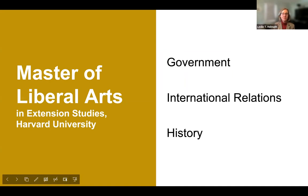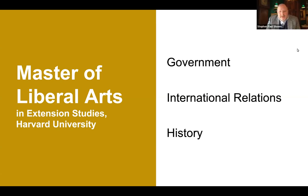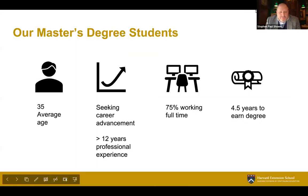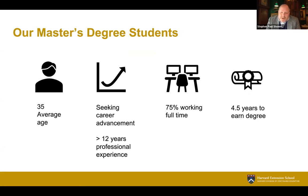Welcome as you contemplate pursuing studies with us in the master of liberal arts program. In the social sciences, we have a variety of non-traditional students. Our average age is 35 years old. These are folks who are either thinking of changing careers or advancing their career. They typically have a depth of professional experience, and the addition of not only coursework but a relevant academic credential is something they're seeking while working full time.